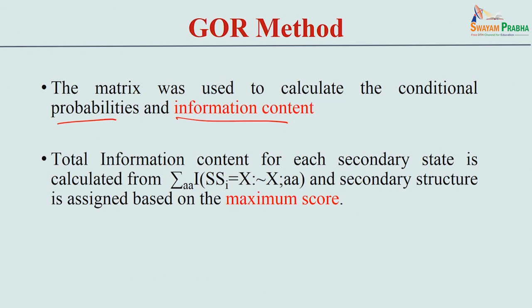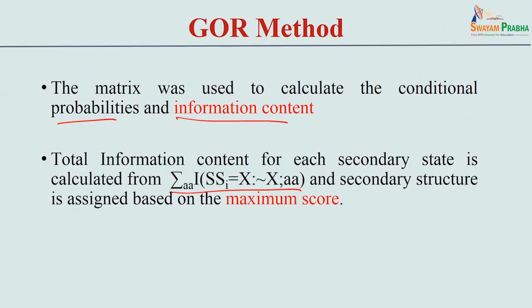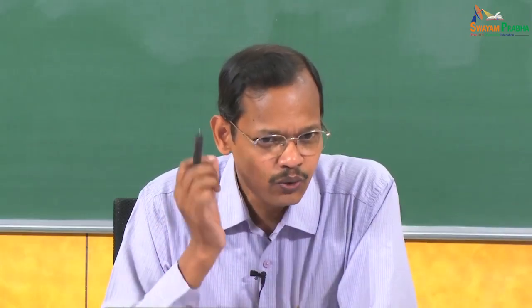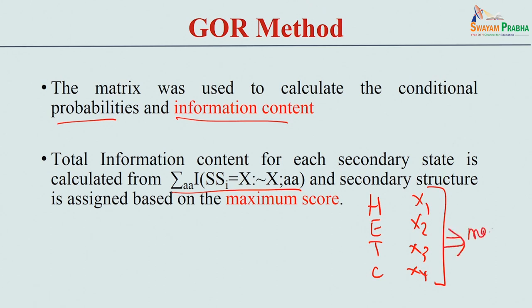They calculated the total information content for each of the 4 states: helix, strand, turn, and coil. This yields 4 values — x1, x2, x3, x4 — and the maximum value determines the preferred secondary structure. This is the core principle of the GOR method.